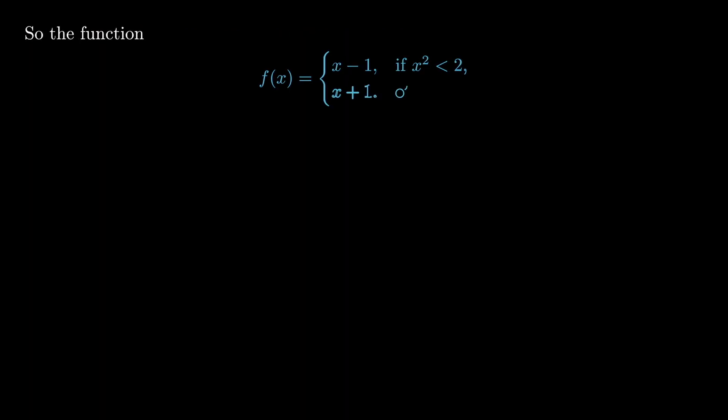So what we see is that the function f of x given by x minus 1 if x squared is less than 2 and x plus 1 otherwise, this function that we just defined is differentiable everywhere with f prime of x equal to 1 everywhere. And so in particular it's positive for all x in the rationals.